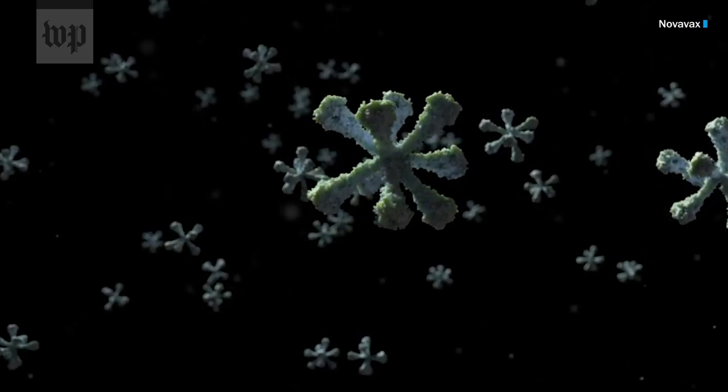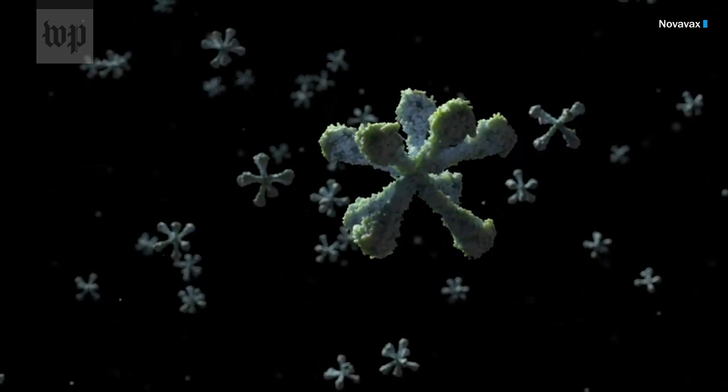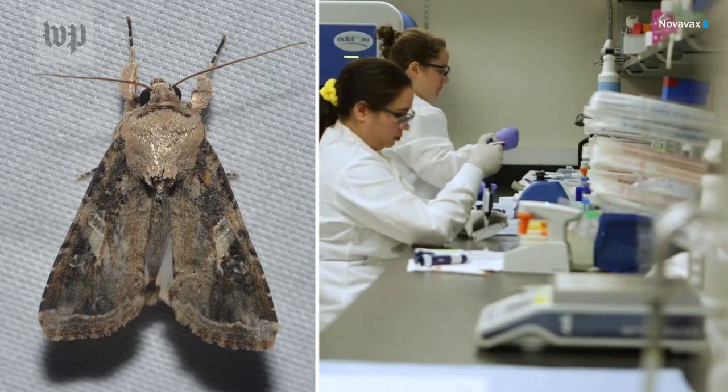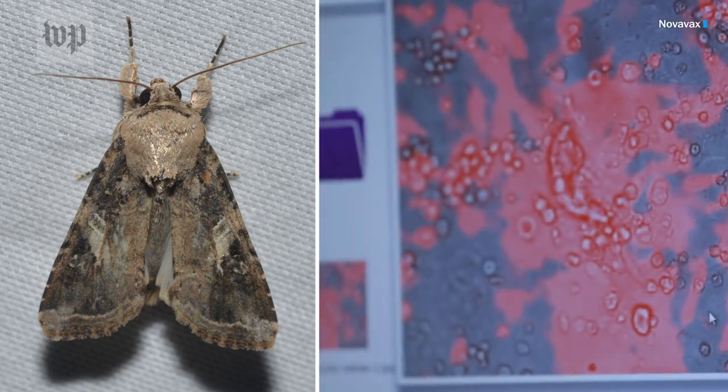For the recombinant protein vaccine to be successful, it needs billions of copies of the spike protein. And to do this, the team at Novavax have hijacked the ovary cells of the fall army worm.